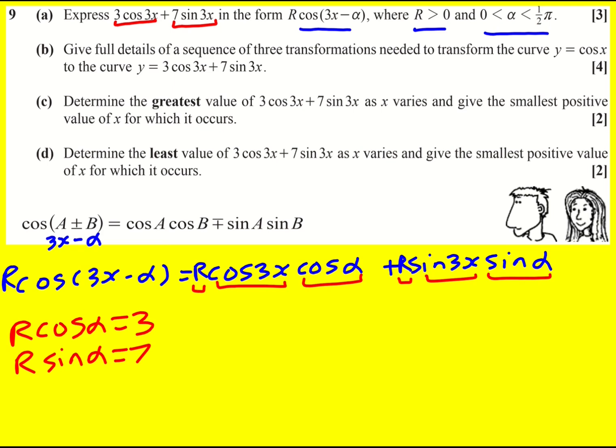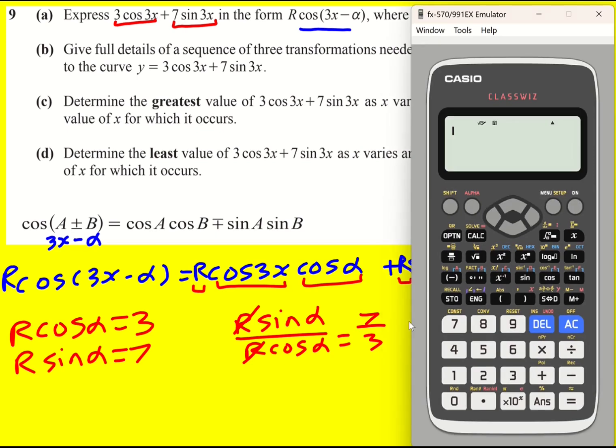Okay, we've got simultaneous equations to solve for R and alpha, and then actually we're done. So I can first of all divide them - divide R sine alpha by R cos alpha because that will equal 7 over 3. The R's cancel, the sine alpha over cos alpha becomes tan alpha. That's why I did it that way around. Tan alpha is 7 over 3.